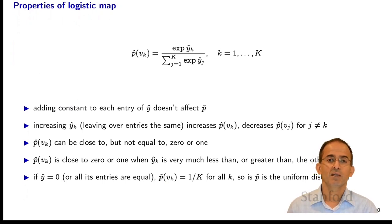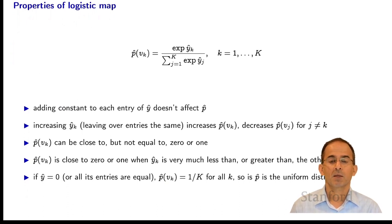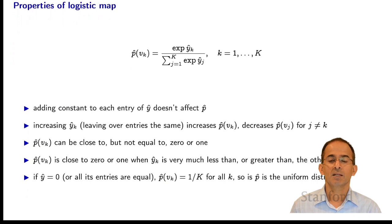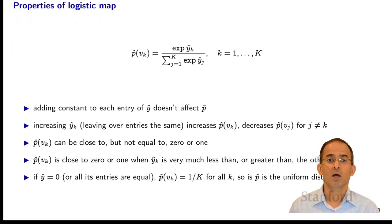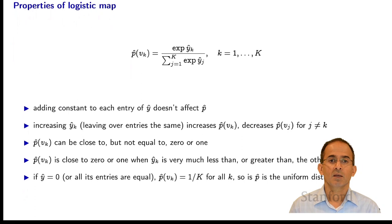You can see that if you take y-hat and add a constant to each entry, that doesn't affect p-hat. Also, if you increase one of the components y-hat_k, that will increase the probability p-hat of v_k and decrease all the others, because they must sum to 1. So larger y-hats correspond to larger probabilities, but p-hat can never equal exactly 0 or 1. It's close to 0 when y-hat_k is much smaller than all the others, and close to 1 when y-hat_k is much larger.